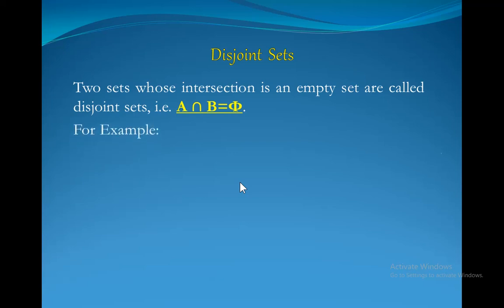For example, if A is a set having elements 1, 2, 3 and B is a set having elements 4, 5, 6, then A intersection B is 1, 2, 3 intersection 4, 5, 6. Well clear, no element is common, so our result is A intersection B is equal to empty set.